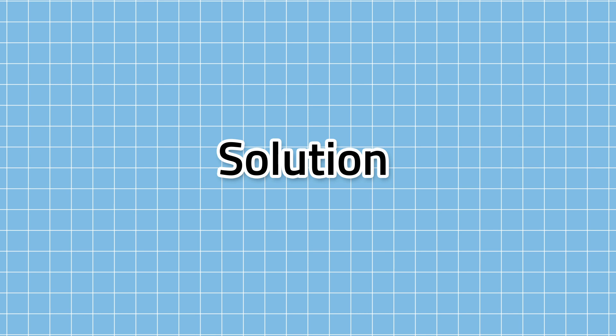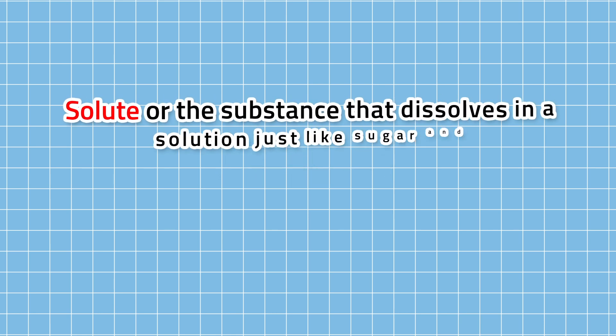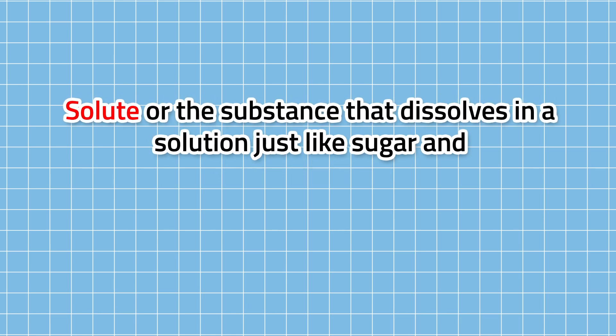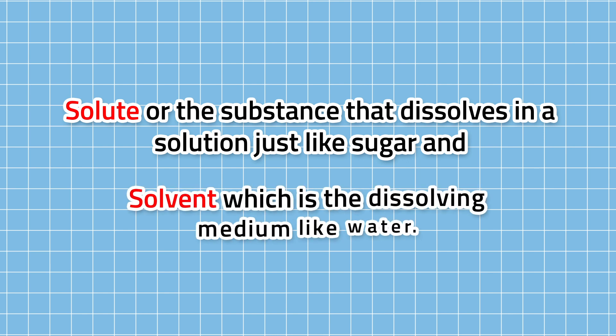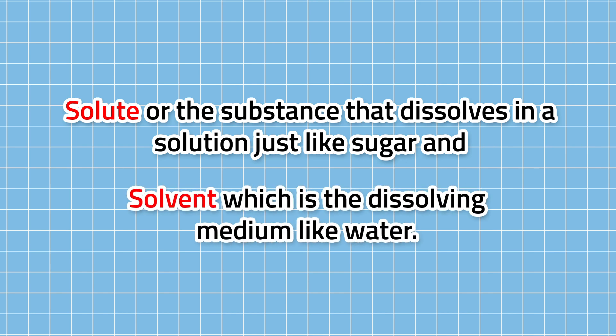Homogeneous mixtures or solutions consist of substances that are classified as solute — the substance that dissolves in a solution, just like sugar — and solvent, which is the dissolving medium, like water.